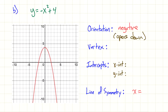Now looking for the vertex — since it opens down, there's no low point, so we're looking at the highest point. The vertex is here at the top. The coordinates are 0, 4. It's always nice to put it on the graph just in case you make a mistake writing it out. You should be including the graphs on your notes as you copy them down, because without the graph all the information doesn't really mean anything — they go hand in hand. So the vertex is 0, 4.